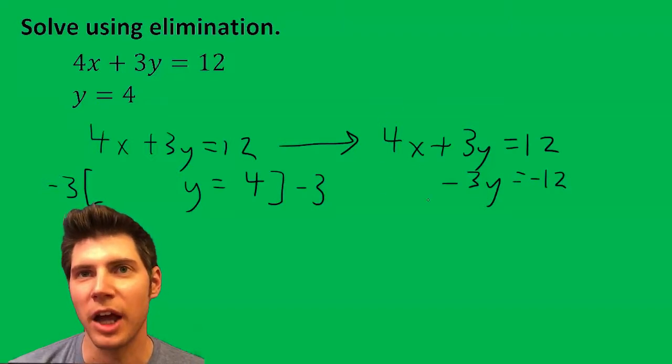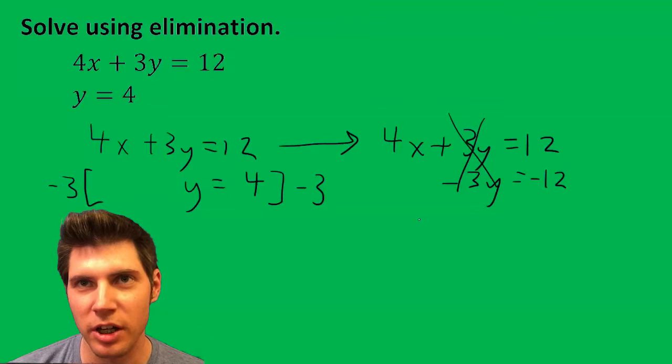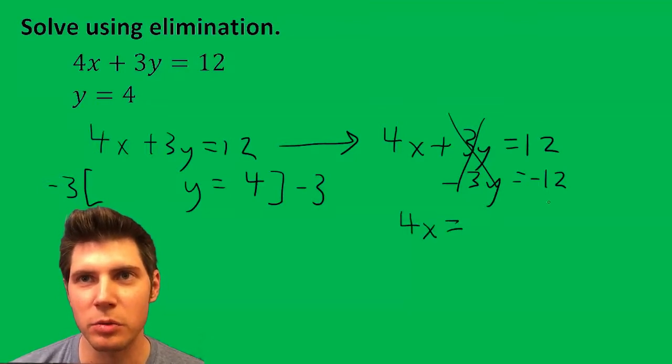So now when we add the two rows, this is going to cancel. We end up with four x equals, and we add those, we get zero. So divide by four, divide by four, we get x equals zero.